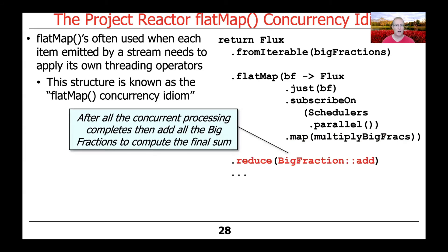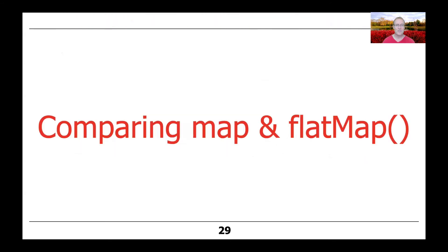After all the concurrent processing is done in the parallel thread pool, we use the reduce operator — which we'll talk about in more detail shortly — to add up all the multiplied big fractions and create a single final sum. We'll show much more about that when we look at the actual example in detail in the case study.